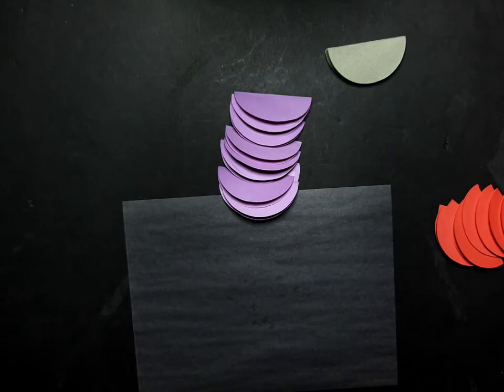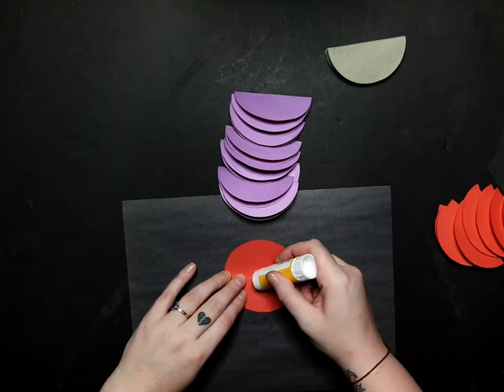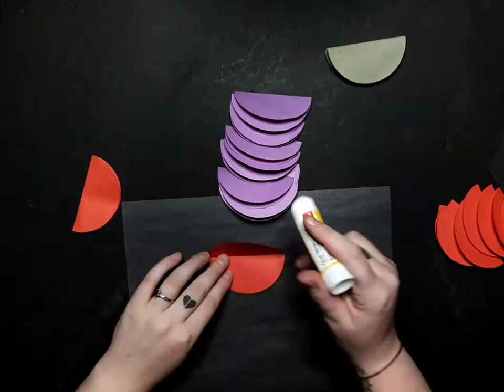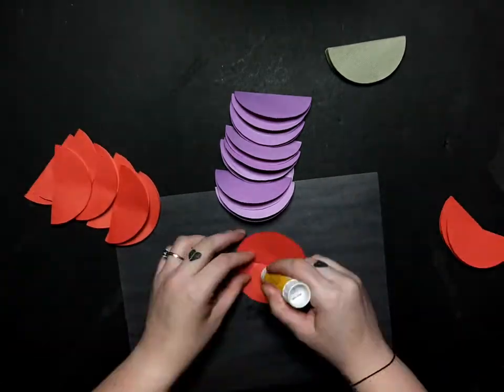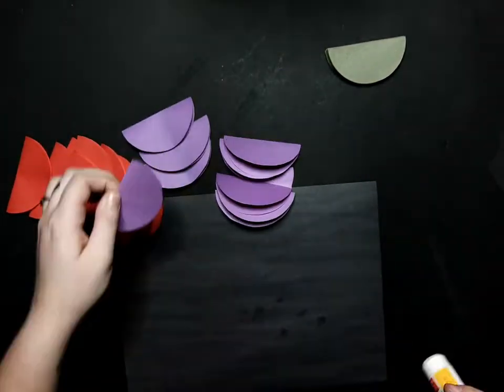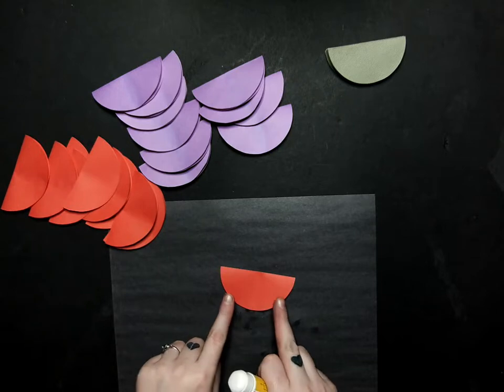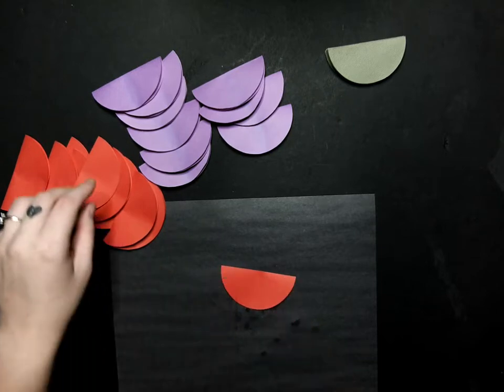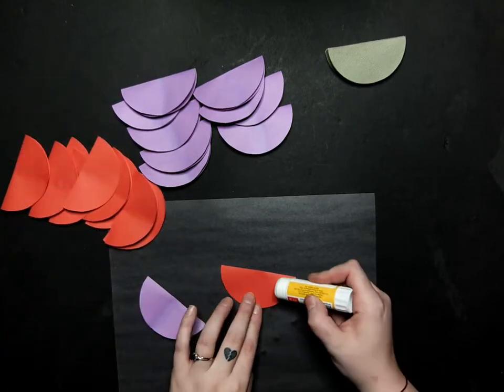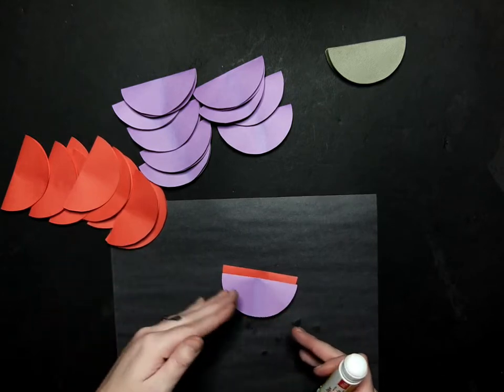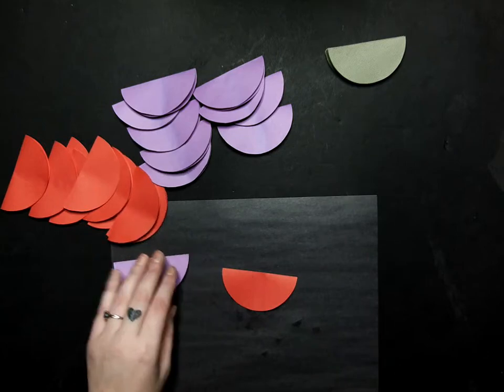Okay. And then we're going to take our glue again and go right down the middle there. Okay, with those middles glued, we're going to go ahead and glue our sides now. So now we want to take a red and then a purple and alternate them to get that cool design.